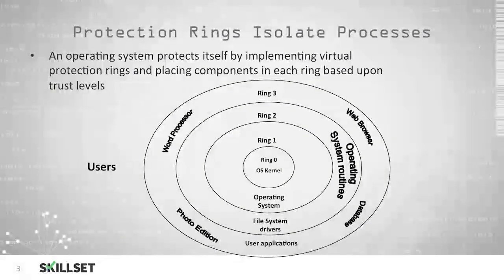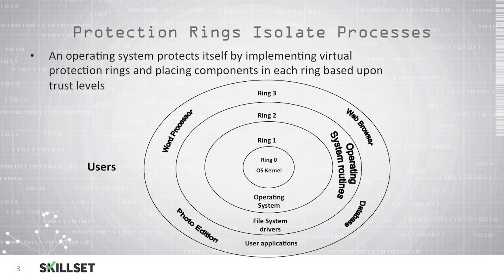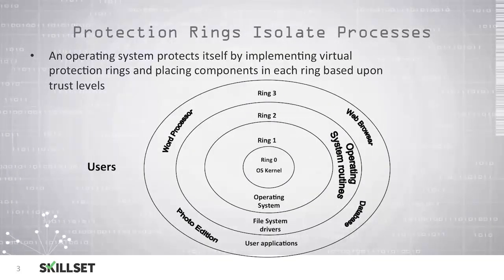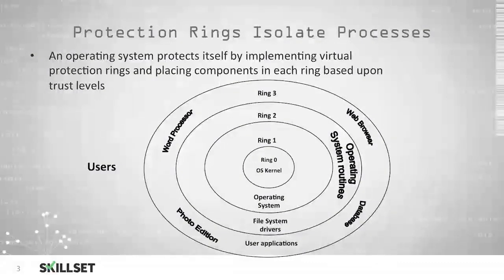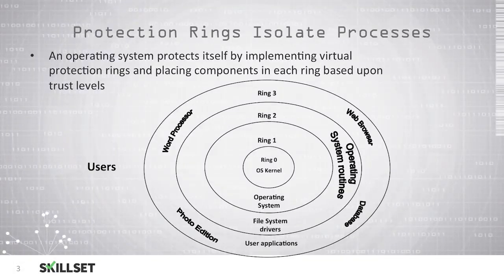Operating systems will use virtual rings and place components in different rings depending on their trust level. The most trusted and most protected level is ring 0. This is where the operating system kernel resides, and the operating system will attempt to prevent anything else from running in this ring. Ring 1 is where the operating system itself operates, and we will generally not see applications operating in ring 1.